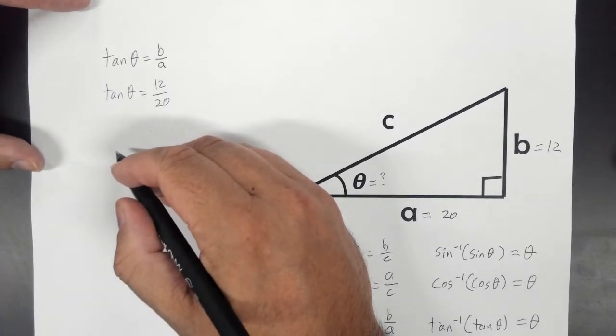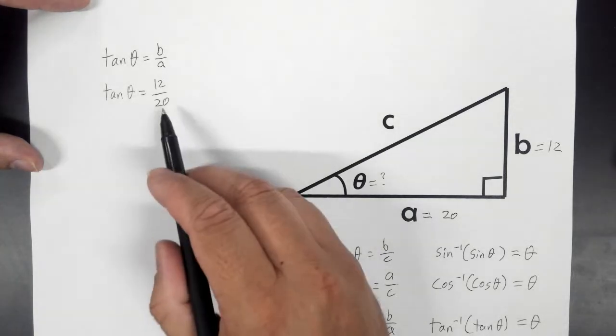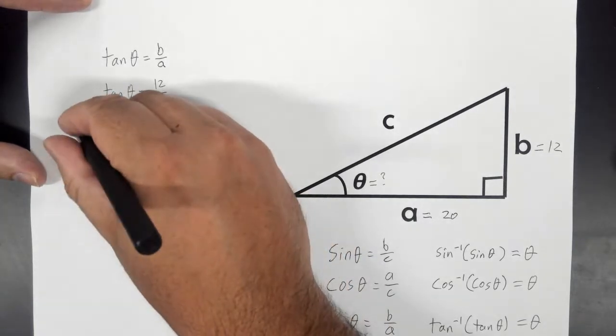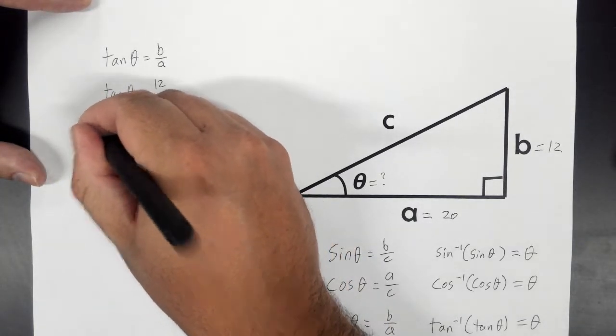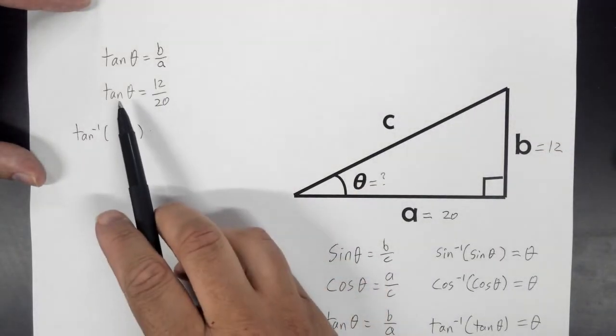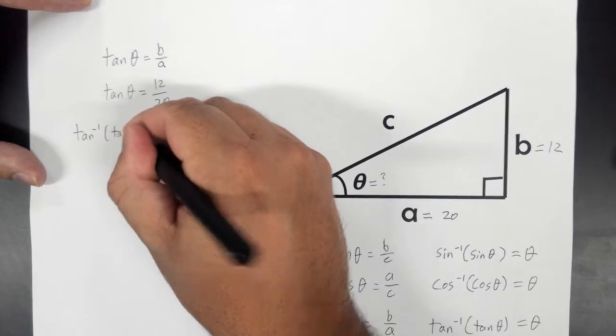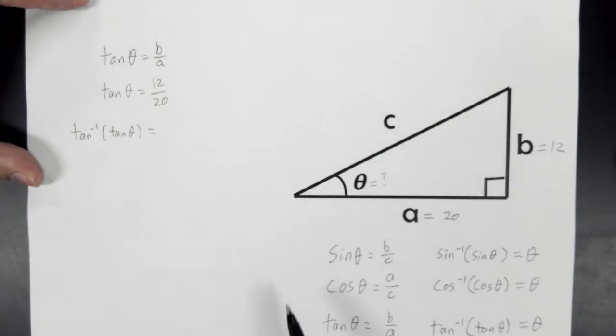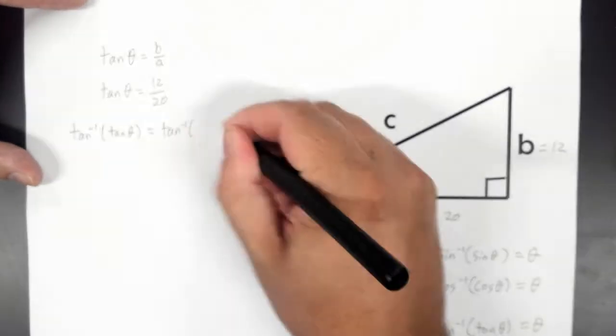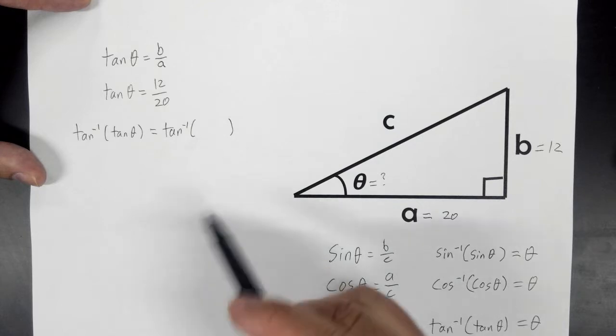And the way we would do that is by using the inverse tangent. So remember, it's a rule in algebra that you can do anything to one side of an equation as long as you do the exact same thing to the other side. And if so, it's still equal. So I'm just going to put inverse tangent here. And then I'm going to put parentheses. And then everything on the left side of this equation will go here. And that's just tangent of theta. And then I have to do the same exact thing to the right side.